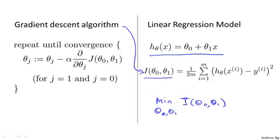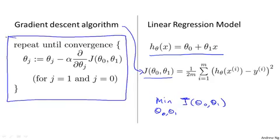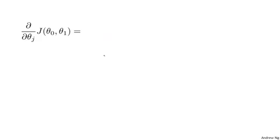Now, in order to apply gradient descent, in order to write this piece of code, the key term we need is this derivative term over here. So we need to figure out what this partial derivative term is. And plugging in the definition of the cost function J, this turns out to be the following.